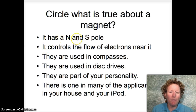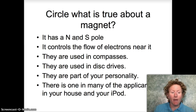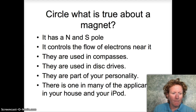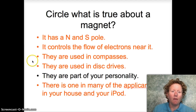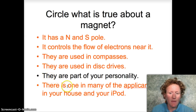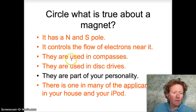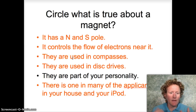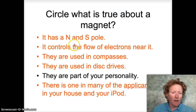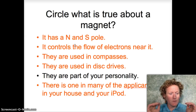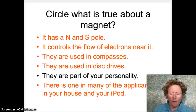What is true about a magnet? Pause the video and pick which ones you think are true. If you picked all of them except 'they're part of your magnetic personality,' you're correct. They're in your appliances, probably your earbuds, maybe in your iPod. They're used in compasses — you can magnetize a sewing needle and use it as a compass. They're used in disk drives, they control the flow of electrons near them, and they have north and south poles.